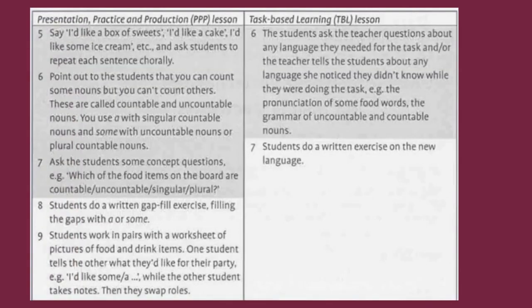Presentation, Practice and Production (PPP) Lesson, Step 5: Say 'I'd like a box of sweets, I'd like a cake, I'd like some ice cream,' etc., and ask students to repeat each sentence chorally. 6. Point out to the students that you can count some nouns but you can't count others — these are called countable and uncountable nouns. You use 'a' with singular countable nouns and 'some' with uncountable nouns or plural countable nouns.